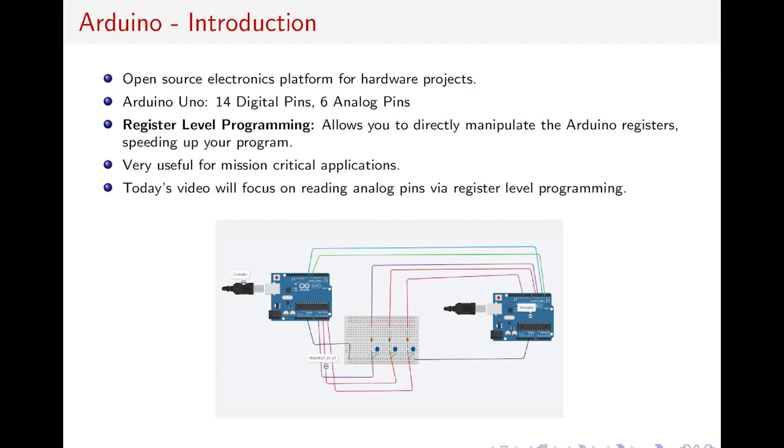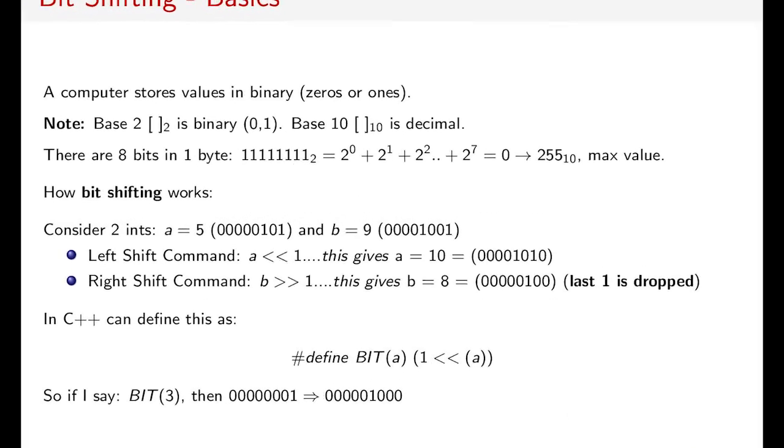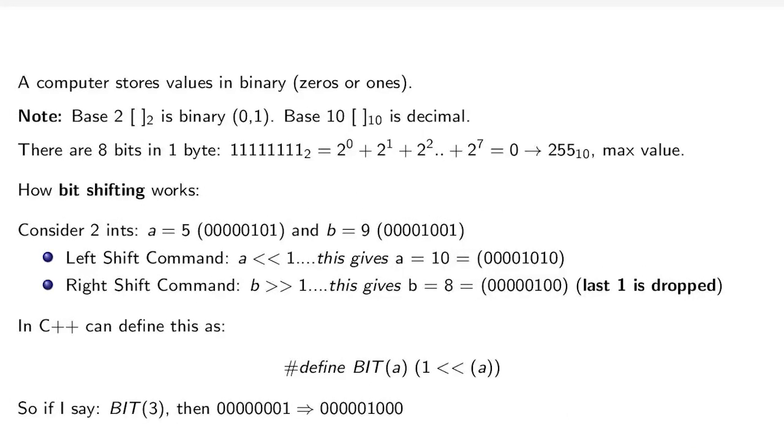By using register level programming, we will not be using the analog read function. Just a basic recap: we have here bit shifting, which is very important in C++. A computer stores values in binary, zeros and ones. That's base 2; base 10 is decimal. One byte has 8 bits. The maximum value is 2^7 + 2^6 and so on, which equals 255.